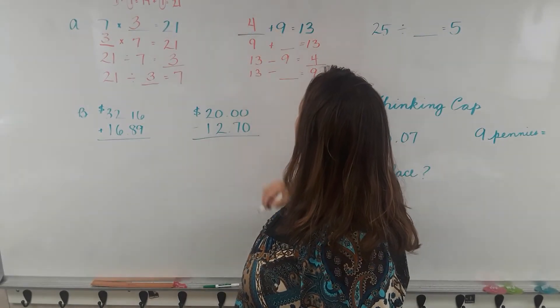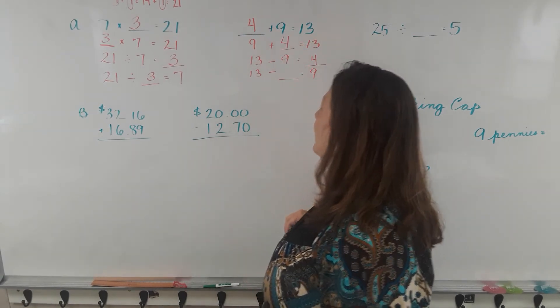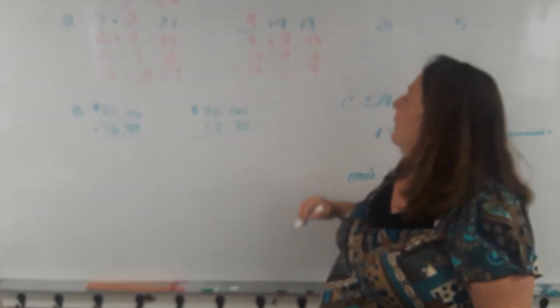4 is the missing addend. 4 plus 9 equals 13, 9 plus 4 equals 13, 13 minus 9 equals 4, 13 minus 4 equals 9.